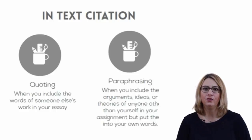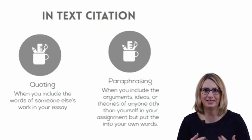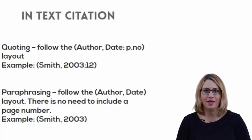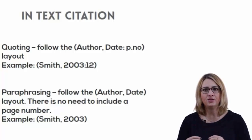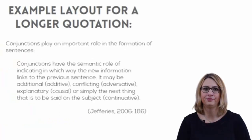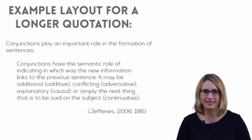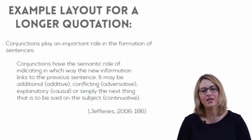When you include the words of someone else's work in your essay, you are quoting. When you include the arguments, ideas or theories of anyone other than yourself in your assignment but put them into your own words, this is called paraphrasing. Every time you quote from another person or refer to their work or ideas in your text, you must follow this with a brief citation in round brackets called parentheses. For standard quoting and paraphrasing, the citation in brackets appears at the end of the quotation or paraphrase. If you quote a section of text that is more than 40 words long, the quotation should be indented either side with the citation in brackets underneath without quotation marks, presented using single line spacing with no inverted commas needed.